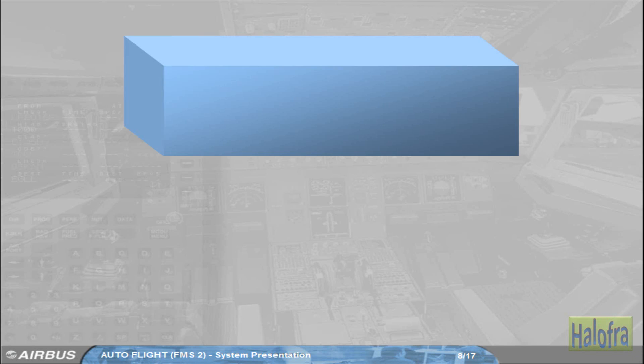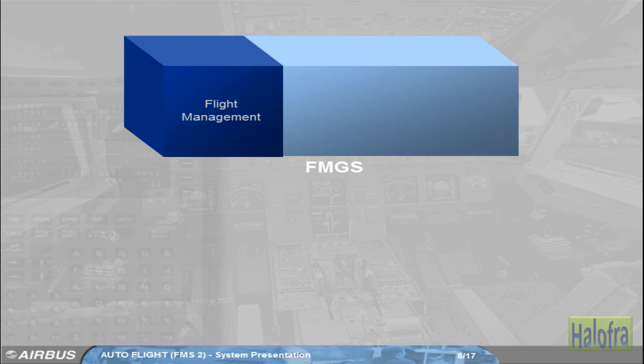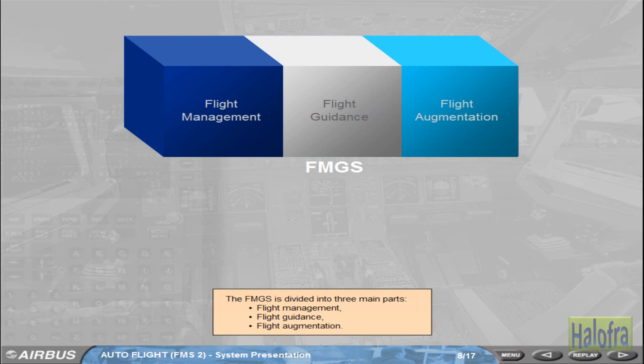The FMGS is divided into three main parts: flight management, flight guidance, and flight augmentation.